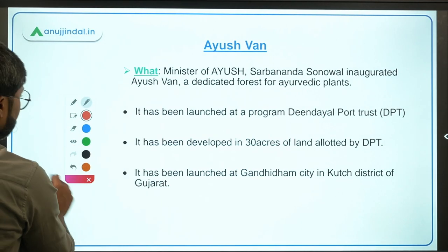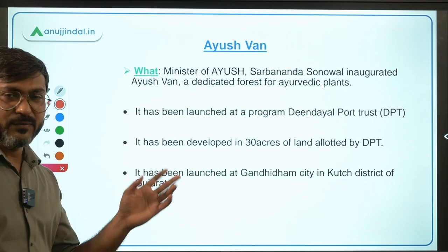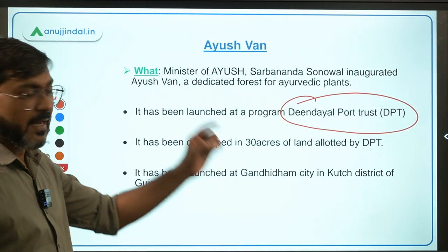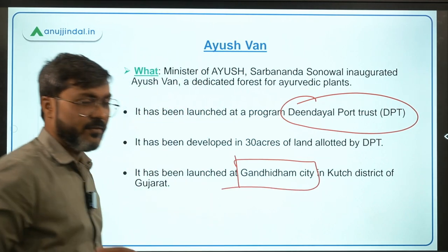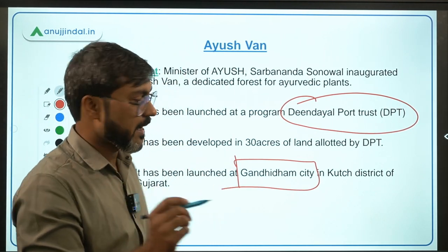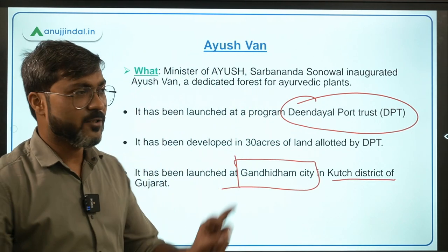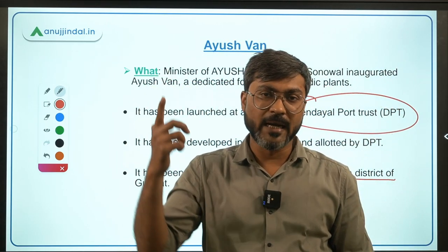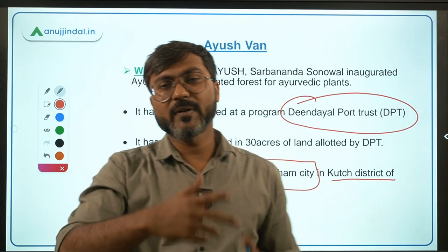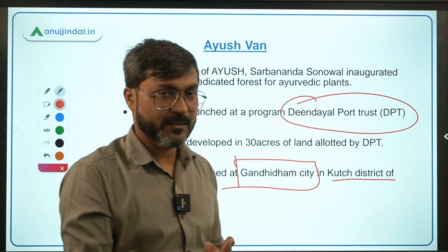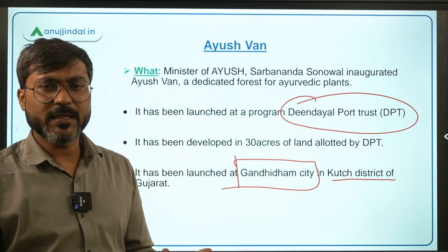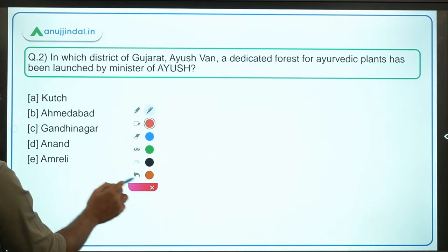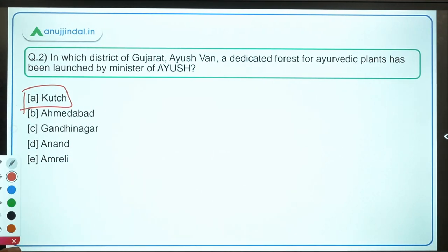Remember three key points: first, Ayush Van has been launched at Gandhi Dam, Kachh district, Gujarat. Second, it is a dedicated forest for medicinal/Ayurvedic plants. Third, it was launched by Minister of Ayush Sarbananda Sonowal as part of a program by Deen Dayal Trust. So the correct answer is Option A, Kachh.